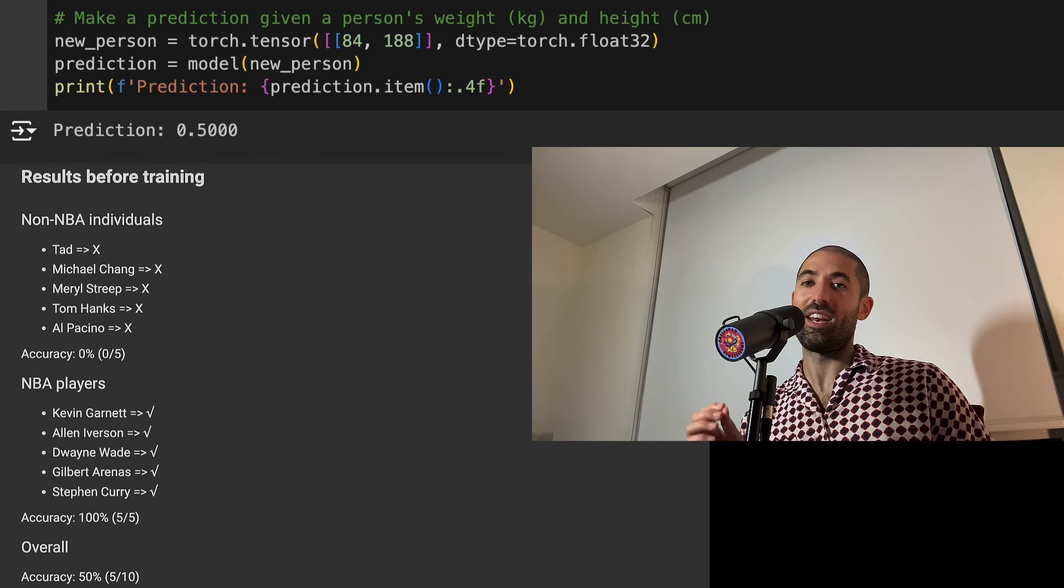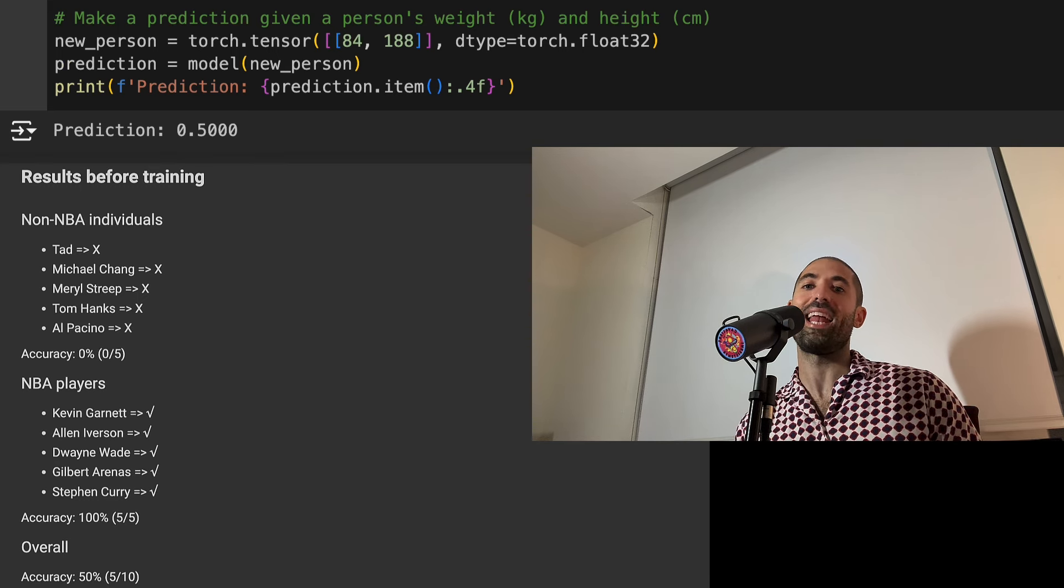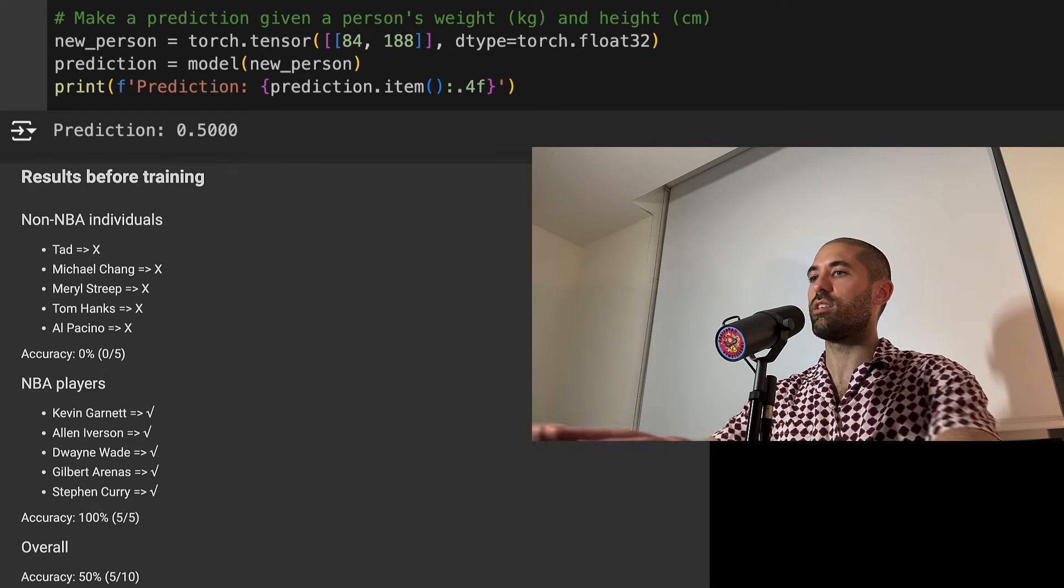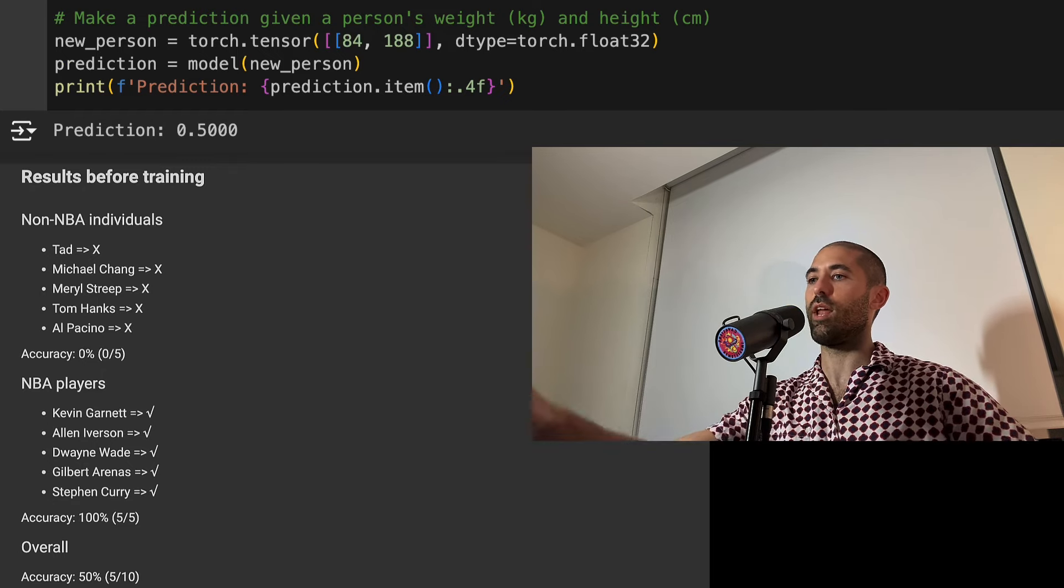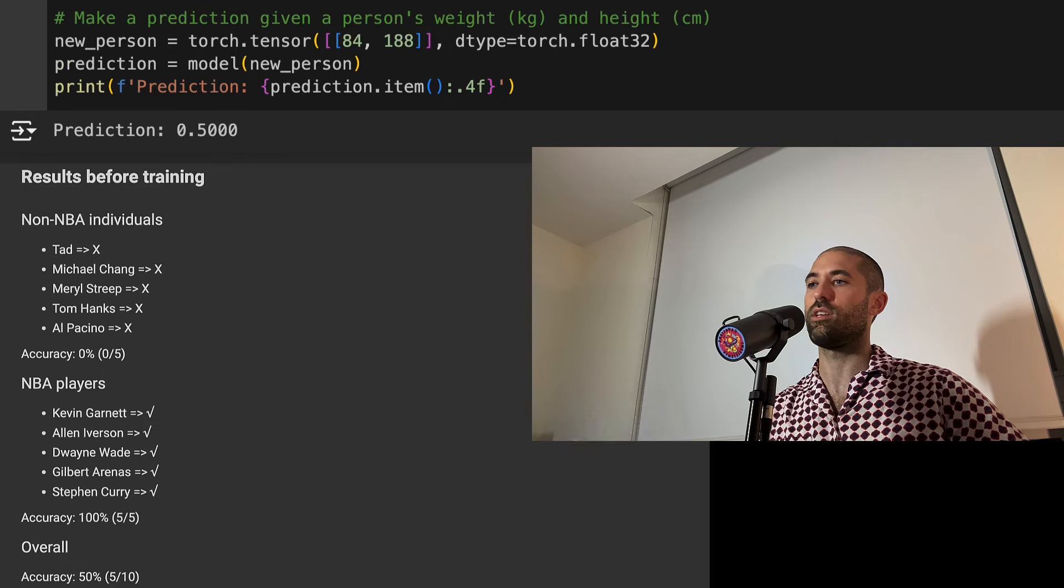Just as before, when we initialized the parameters of our neurons to have values of zero, it made them trigger happy, meaning that they would respond to any input. Here you can see, regardless of the individual's data that's being passed through the neural network, the neural network is outputting a value of 0.5, meaning it's always telling us this person is an NBA player. Now let's train our neural network on some data and afterwards retest these individuals to see what it's saying.